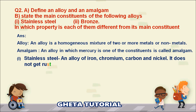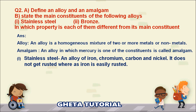The main constituents of stainless steel are iron, chromium, carbon, and nickel. It does not get rusted, whereas iron rusts easily. By mixing iron with chromium, carbon, and nickel, we get stainless steel, which is strong and never corrodes.